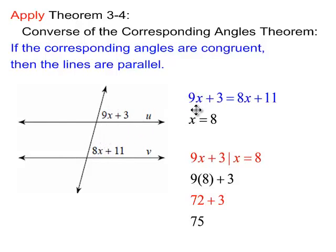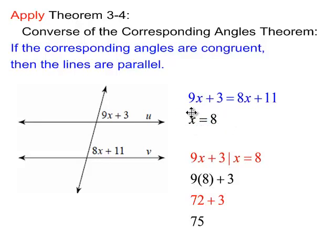So I set up 9x plus 3 is equal to 8x plus 11. If you subtract 8x from both sides and subtract 3 from both sides, you get x equals 8. This is the value x must be in order for these two expressions to be equal to each other and, consequently, those two angles to be congruent.